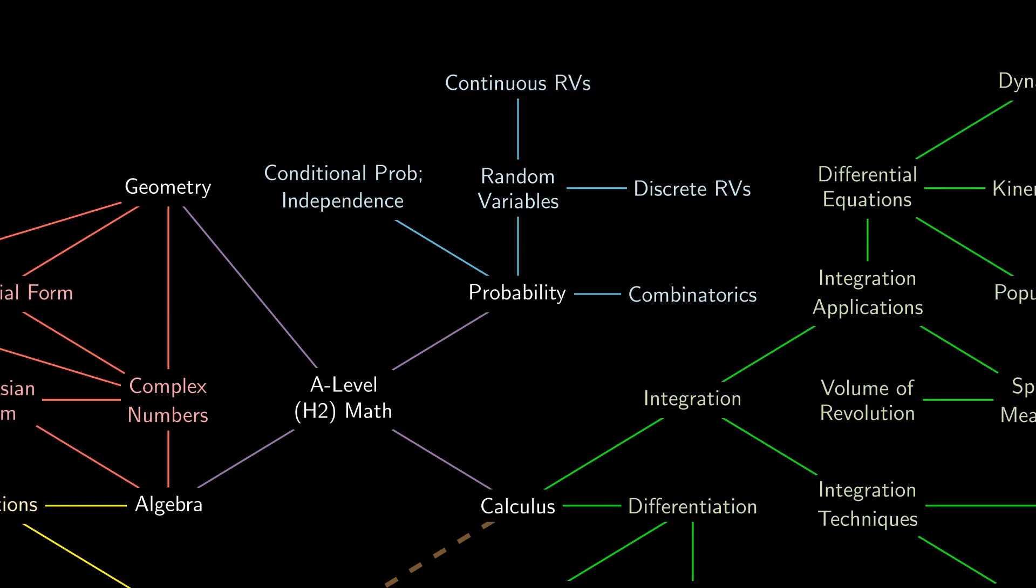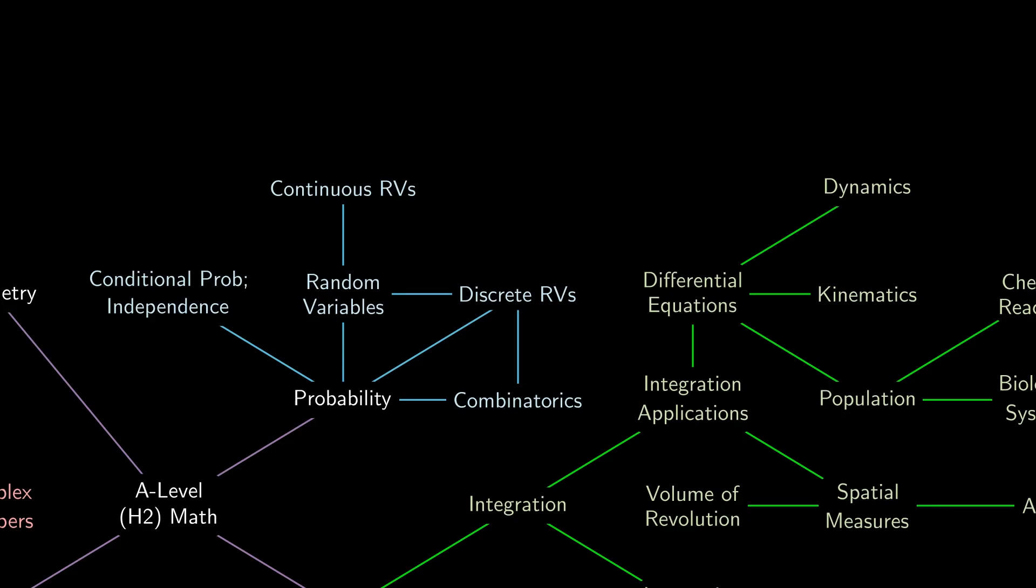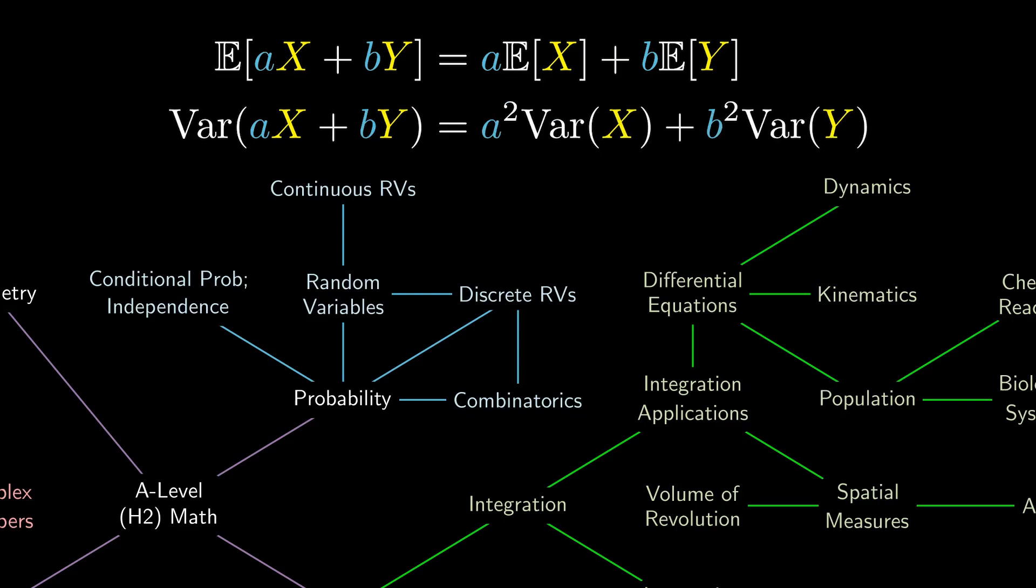The ideas in combinatorics and probability help us make sense of discrete random variables, and two really important equations in this area are the expectation and variance properties. The variance properties hold when x and y are independent.